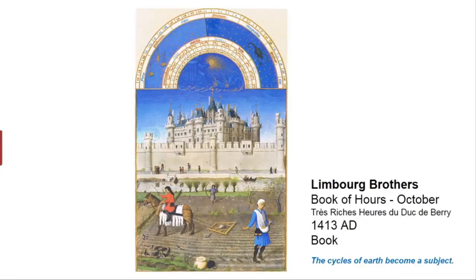This is a page from a book of hours — a kind of calendar book. When we looked at early Christian art and Gothic art, we saw manuscript illuminations typically in a very abstract mode. A sign of this Northern realism is that all of a sudden illuminations become realistic, believable images that are in this world.